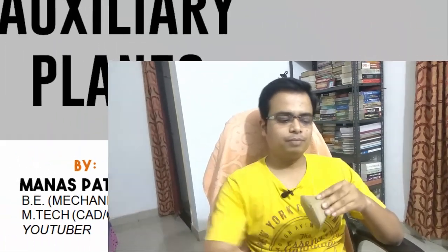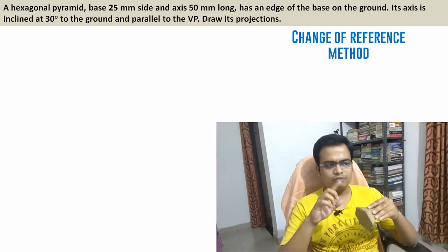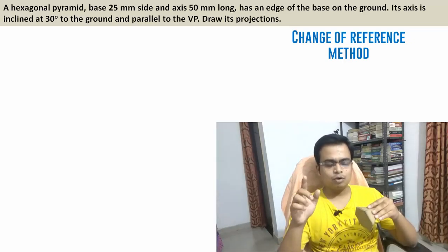Today we're gonna be taking up a problem based on projection of solids, which we'll be constructing with the help of auxiliary planes or the change of reference technique. So let's see what the problem has in store. It goes like this: a hexagonal pyramid based 25 mm side and axis 50 mm long.